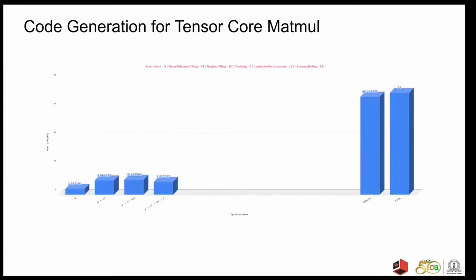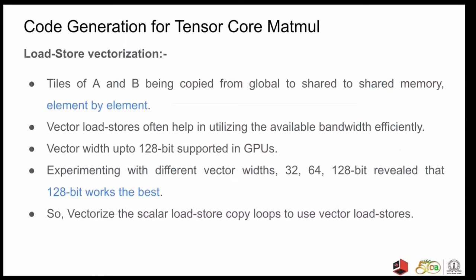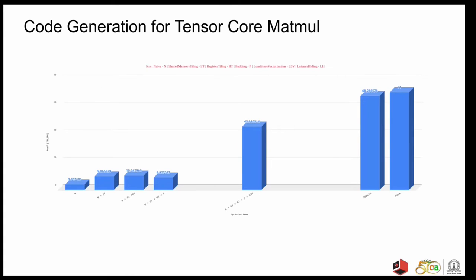So, it actually turns out that the bottleneck in the MatMul kernel is the transfer from global to shared memory. So, now we'll see an optimization that can help reducing the global memory load latency. It's well known that vector loads and stores are faster than scalar loads. So, we vectorized the global memory to shared memory data transfers and MLIR enables us to experiment with different bit widths very easily. So, we experimented with 32, 64 and 128 bits and we found out that 128 bits works the best. So, we vectorized these copy loops and we see that we get a performance improvement that goes up to 45.9 teraflops.